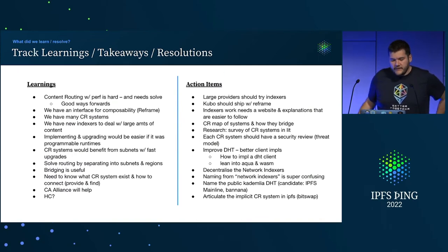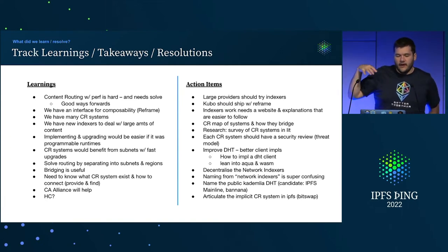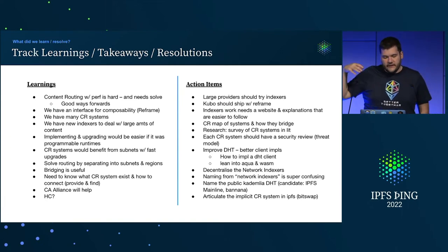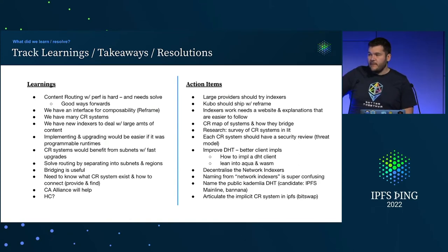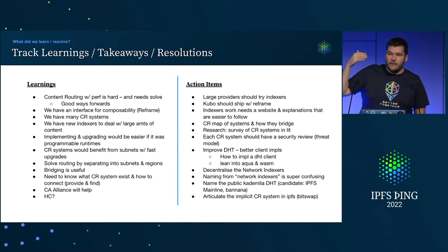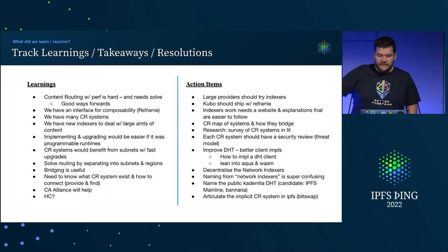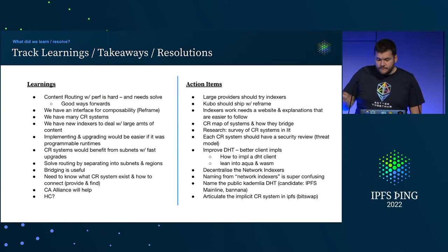We had a ton of takeaways including: we need a lot more work on content routing, this needs to be formalized more as specific projects themselves, we need to give them names, we need to improve a lot of the naming around content routing and be able to refer to specific things — like the content indexers and the DHT and so on.